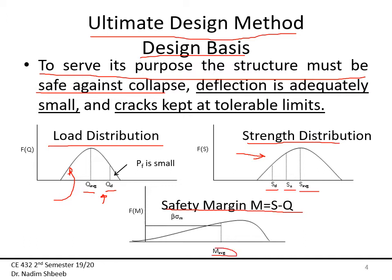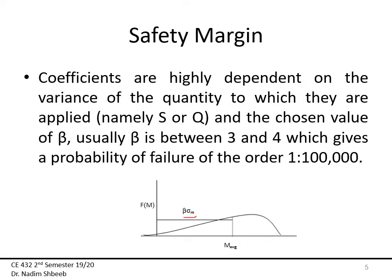The overall safety margin is the difference between strength and load — the higher the strength and the lower the load, the higher the safety margin. The further the mean of the safety margin is from zero, the safer the structure is. The coefficient beta is a multiple of the standard deviation; for a normal distribution, to keep the probability of failure at an order of 1 in 100,000, beta should lie anywhere between 3 and 4.